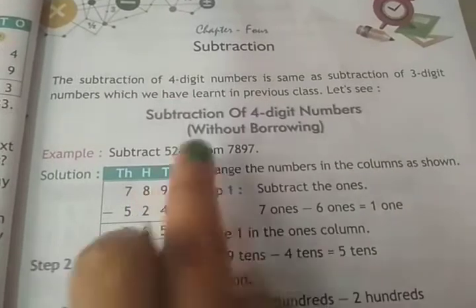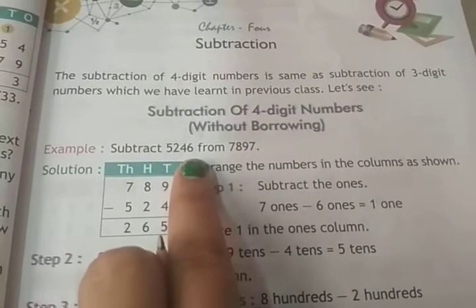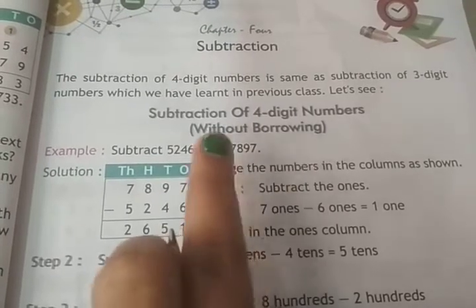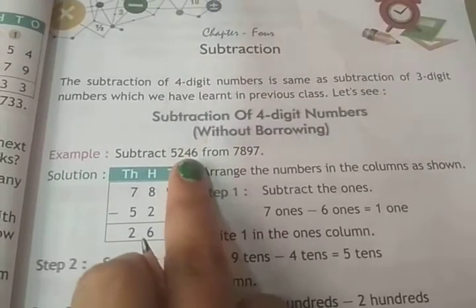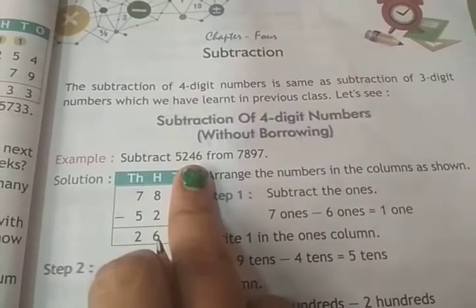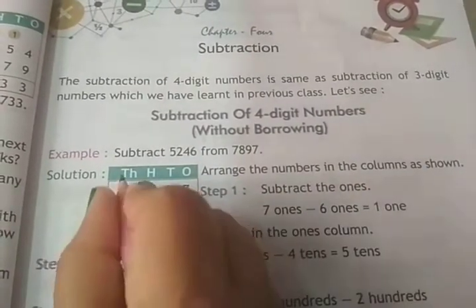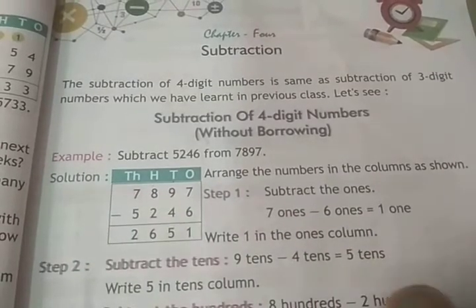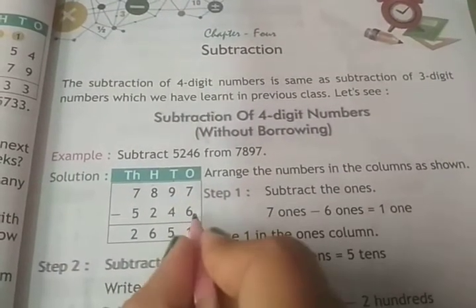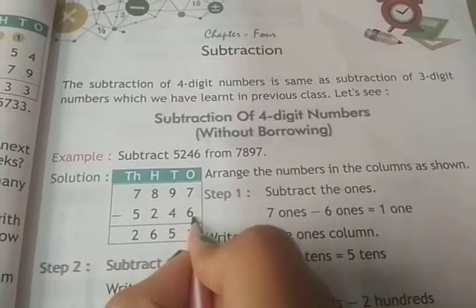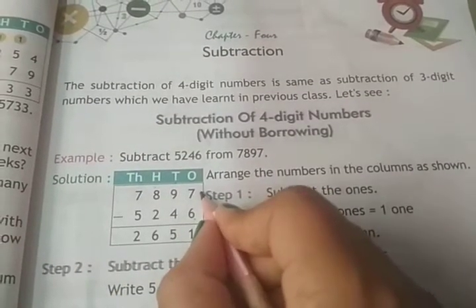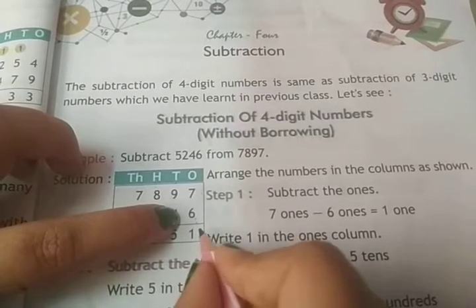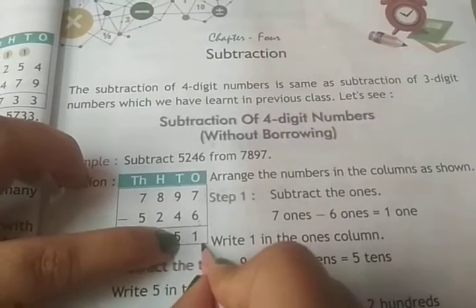Yahan example dekhenge — hum 5246 from 7897. 7897 mein se humein 5246 subtract karna hai. Ones, tens, hundred, thousand. Jab bhi subtraction start karte hain, hum ones ki place se start karenge — from the right-hand side. Ones place: 7 minus 6, saat mein se 6 minus karenge, answer aayega one.